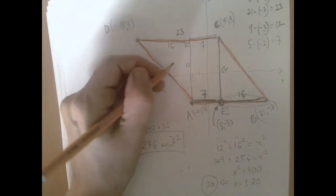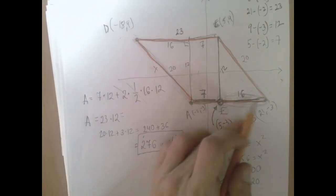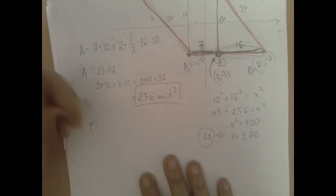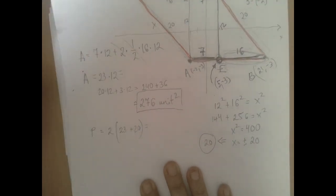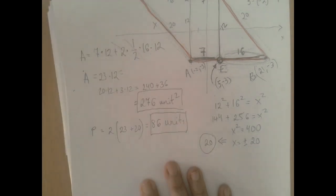So now that we know that this side that we labeled X is 20 units long, we just add these for 20 plus 23, 20 plus 23. So the perimeter is 2 times 23 plus 20, so that's 2 times 43, that's 86 units long.